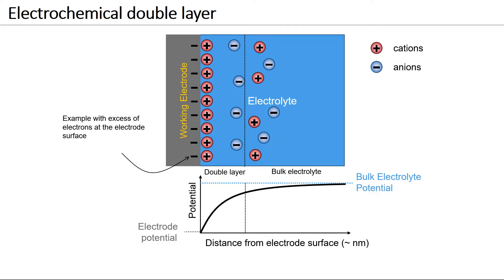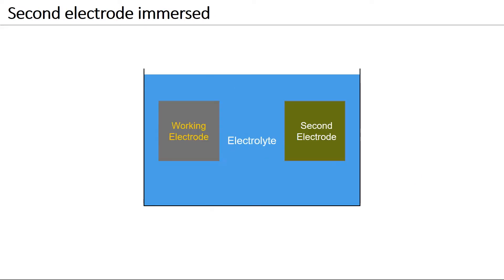When using electrochemical techniques, the studied metal is referred to as the working electrode. To obtain information on the potential of the working electrode, a second electrode is needed.